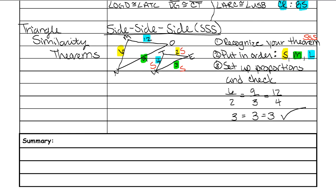On your test, you're going to have to write the triangle similarity statement. Your first triangle you set up however you want — I'm going to name it M, N, O. For the second one, write it in corresponding order just like with congruent triangles. M is between blue and yellow; between blue and yellow on my smaller one is T. N is between yellow and green; between yellow and green is E. O is between blue and green; between blue and green is U. Now we can set up our sides for the proof part of your test. Since it's side-side-side, we have to list our three corresponding proportional sides.